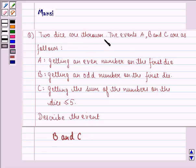two dice are thrown. The events A, B and C are as follows. Event A is getting an even number on the first die. Event B is getting an odd number on the first die. And event C is getting the sum of the numbers on the die as less than or equal to 5.